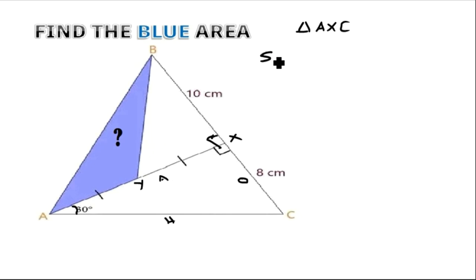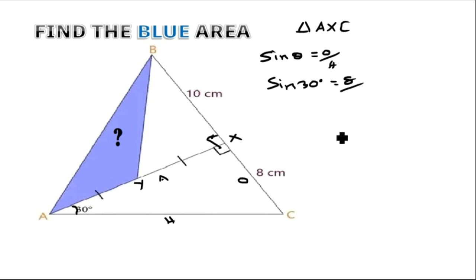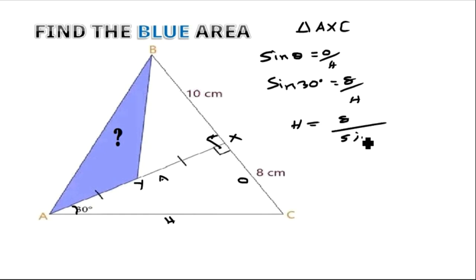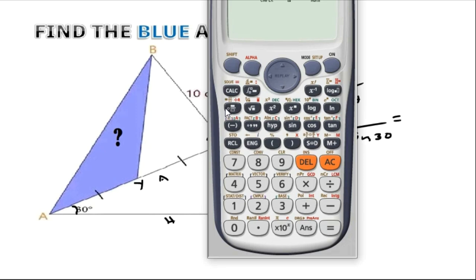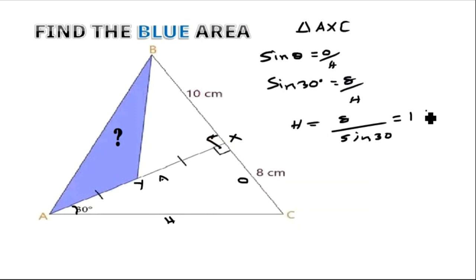Starting with sine: sine theta equals opposite over hypotenuse. So sine 30° equals 8 (the opposite side) over AC (the hypotenuse). Cross multiplying gives AC = 8 divided by sine 30°. Since sine 30° equals one half, we get 8 divided by one half, which equals 16. So AC = 16.